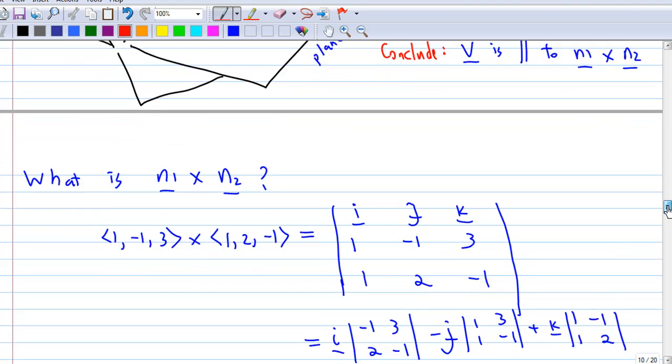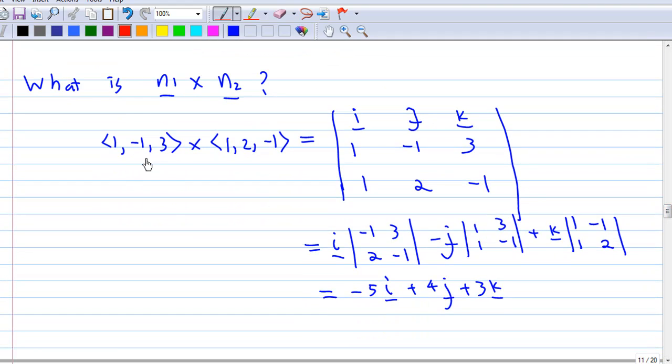How do we find n1 cross n2? So n1 is (1, -1, 3). n2 is (1, 2, -1).